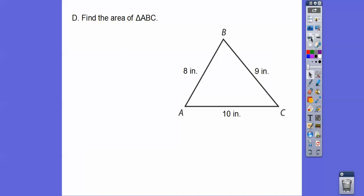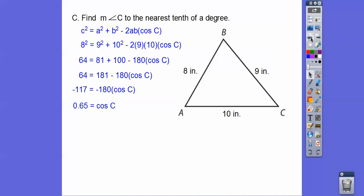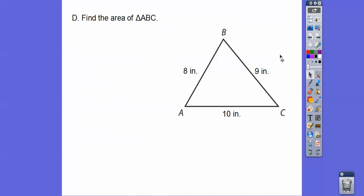All right, so here's section D here. So find the area. So first we've got to find an angle measure. So we found angle C from the last lesson to be 49.5 degrees.